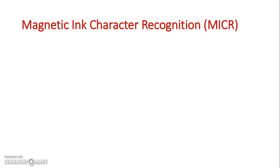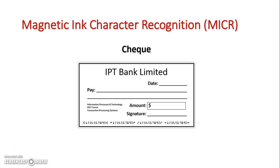So now let's take a closer look at what a document may look like. Here's a specific check. We've got all our data that can be written on it. It's these areas down the bottom where these numbers are written that are the MICR code, and we can see there's four separate sections specifically on this check.